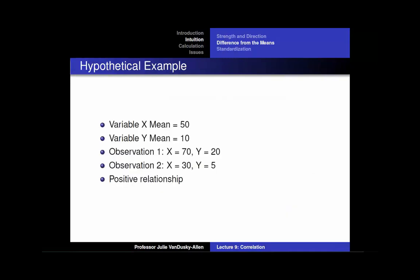As a numerical example, consider the following two variables, variable x and variable y. The mean of variable x is 50 and the mean of variable y is 10. In observation 1, x is 70 — above the mean of x — and y is 20 — above the mean of y. For observation 2, x is 30 — below the mean of x — and y is 5 — below the mean of y. This implies that there is a positive relationship between x and y: when an observation is above the mean of x, it is above the mean of y; when an observation is below the mean of x, it is also below the mean of y.